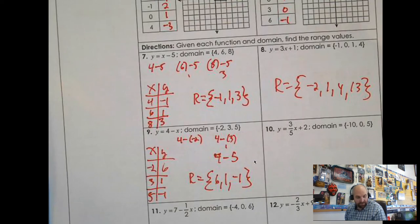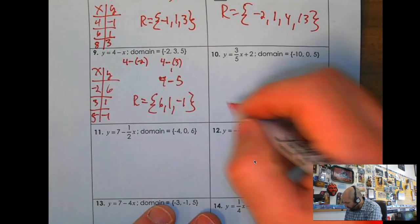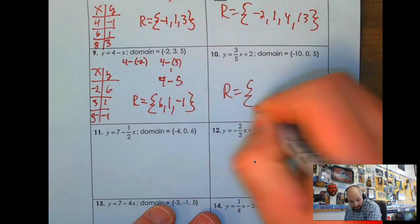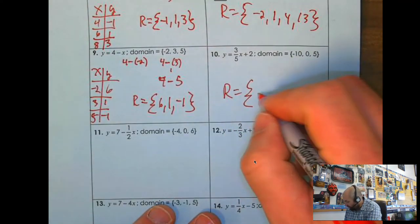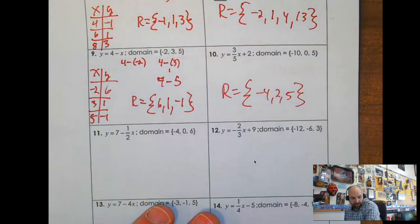10, why don't you, I'm going to have you pause the video and do number 10 and I'll give you the range in just a second. Number 10, your range is negative 4, 2, and 5. That's not the order in which it receives, but it might be.